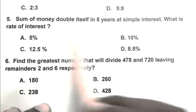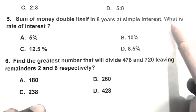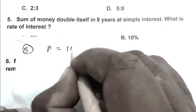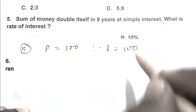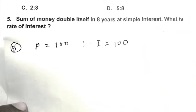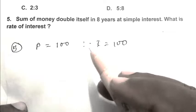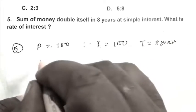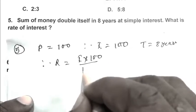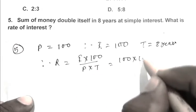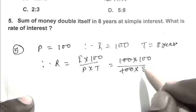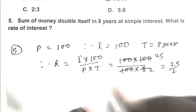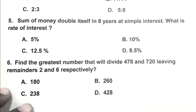Question number 5: Sum of money double itself in eight years at simple interest. What is the rate of interest? So friends, we take principal as 100, therefore interest also 100, when amount doubles itself. I deposited 100 rupees in the bank, I get 200 rupees as amount. So friends, interest becomes 100, time 8 years. So rate R equals I multiplied by 100 upon P into T, that is 100 into 100 upon 100 into 8. That equals 25 upon 2, that is 12.5 percent. So friends, C is the right answer.